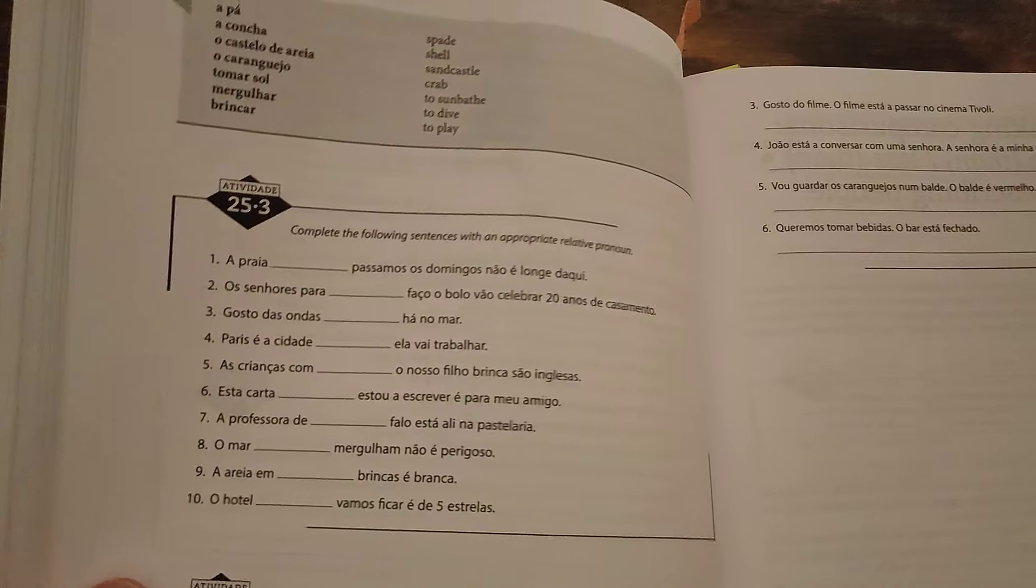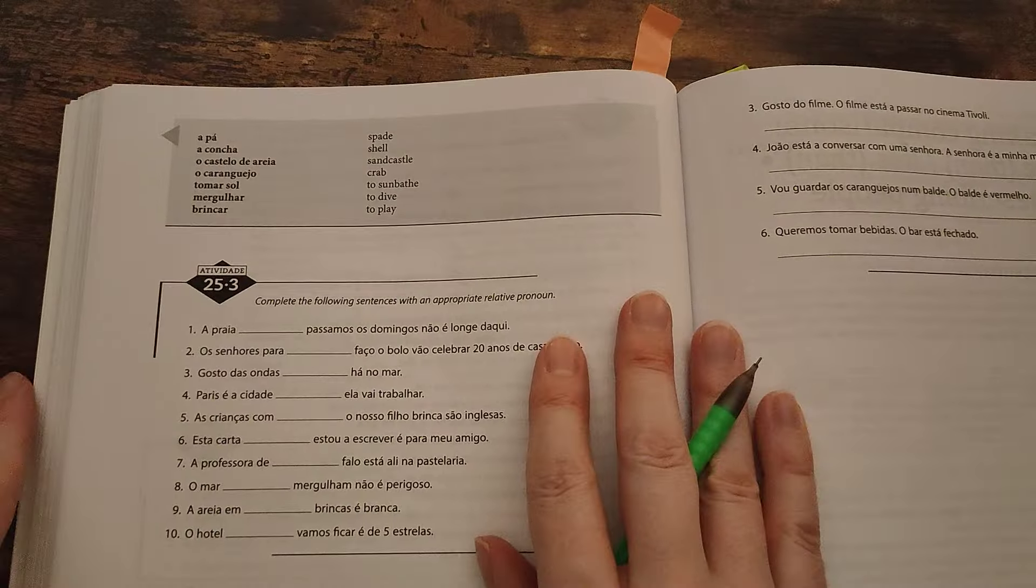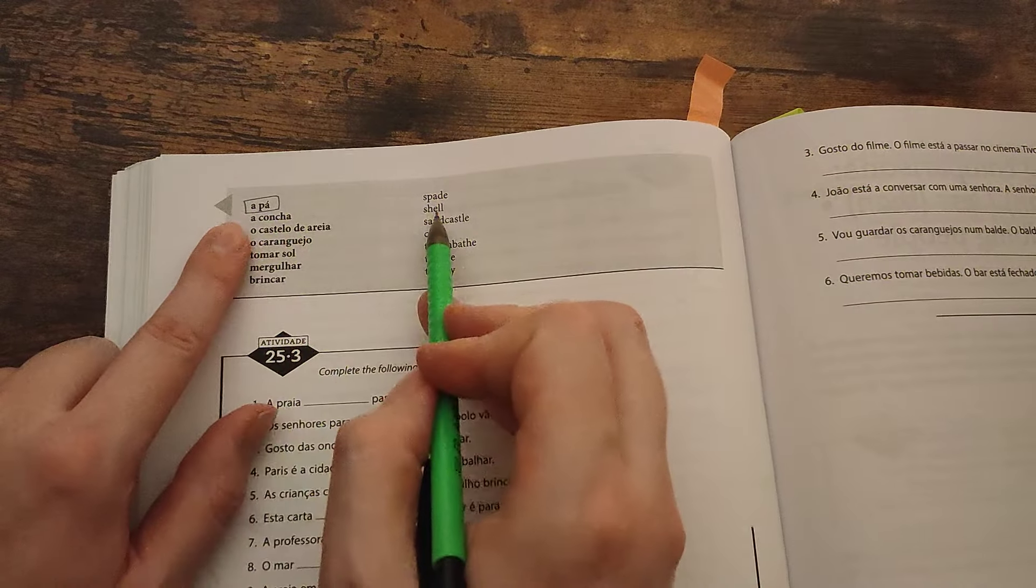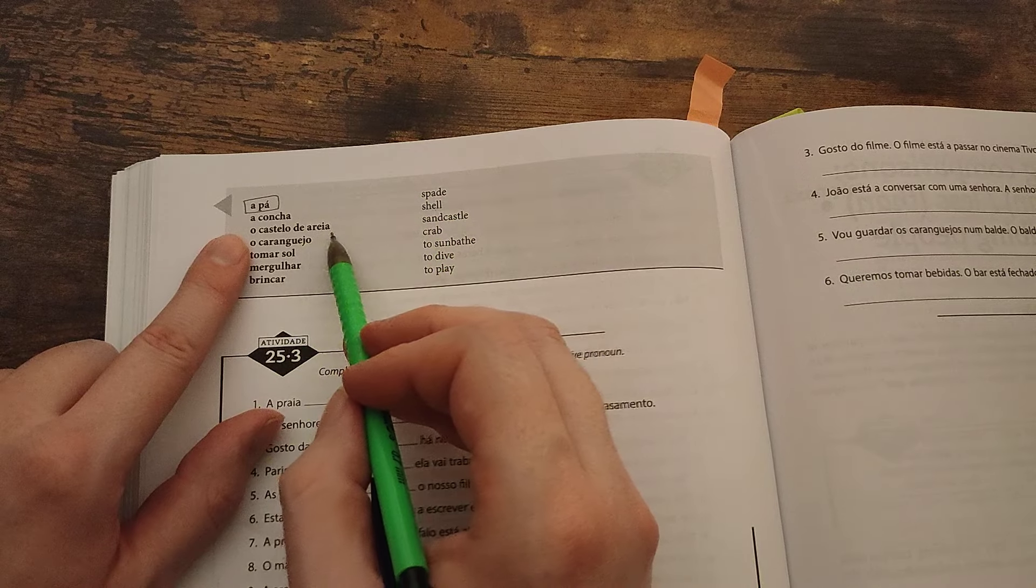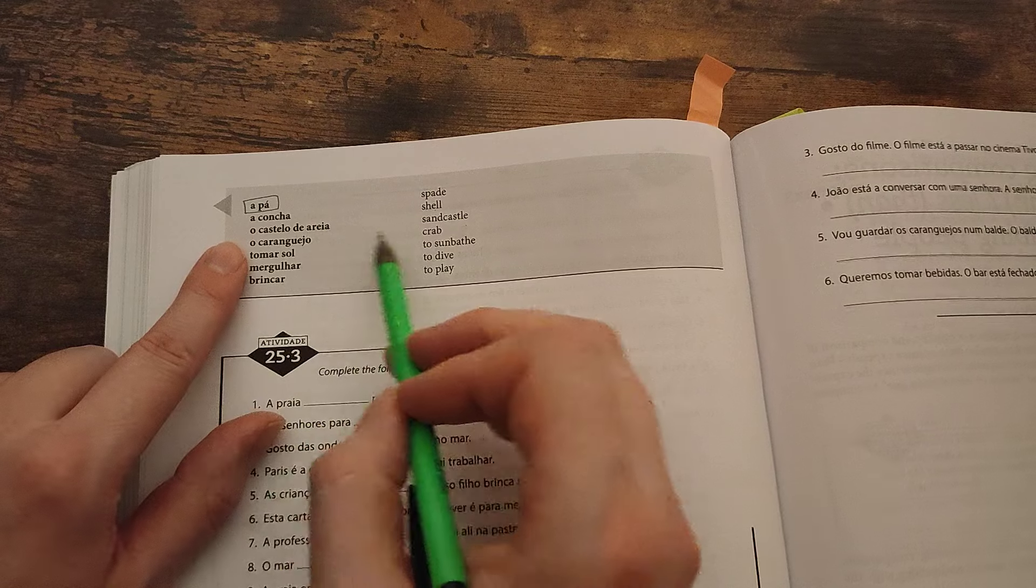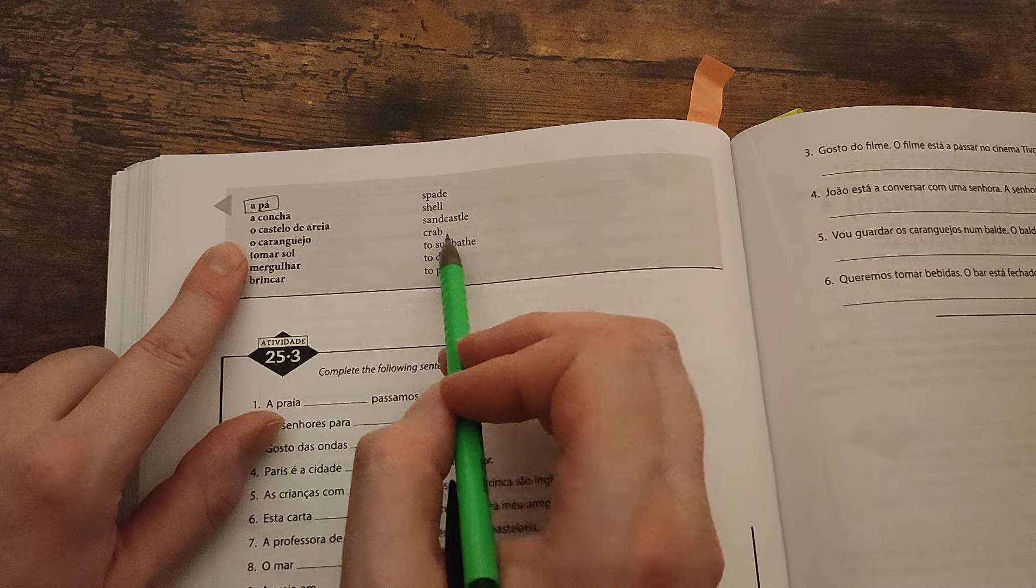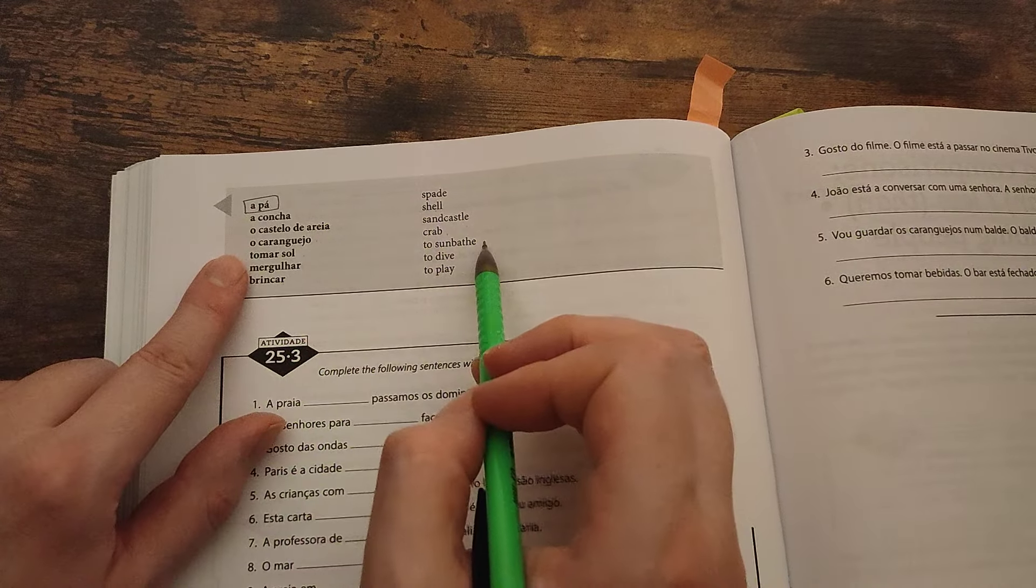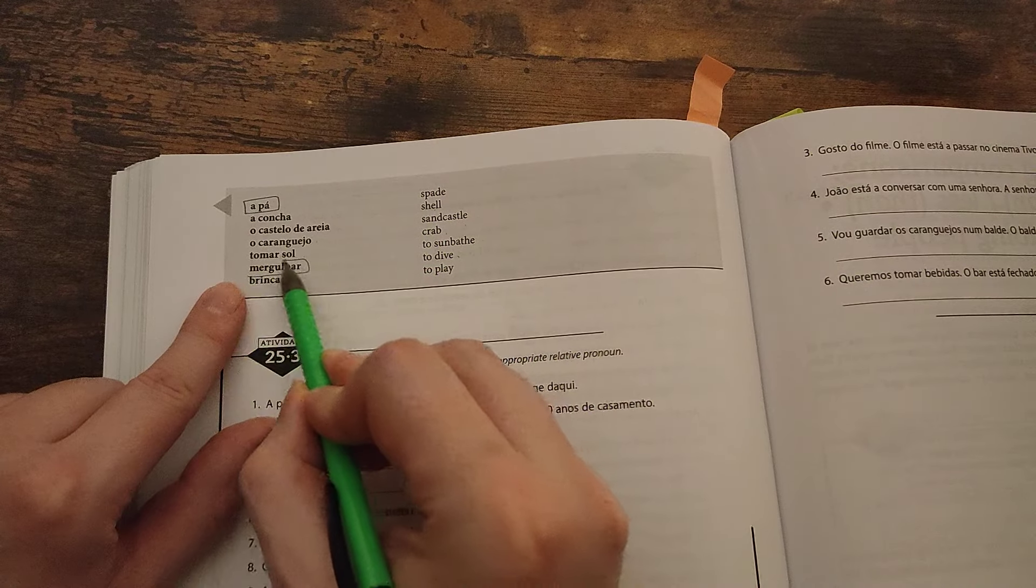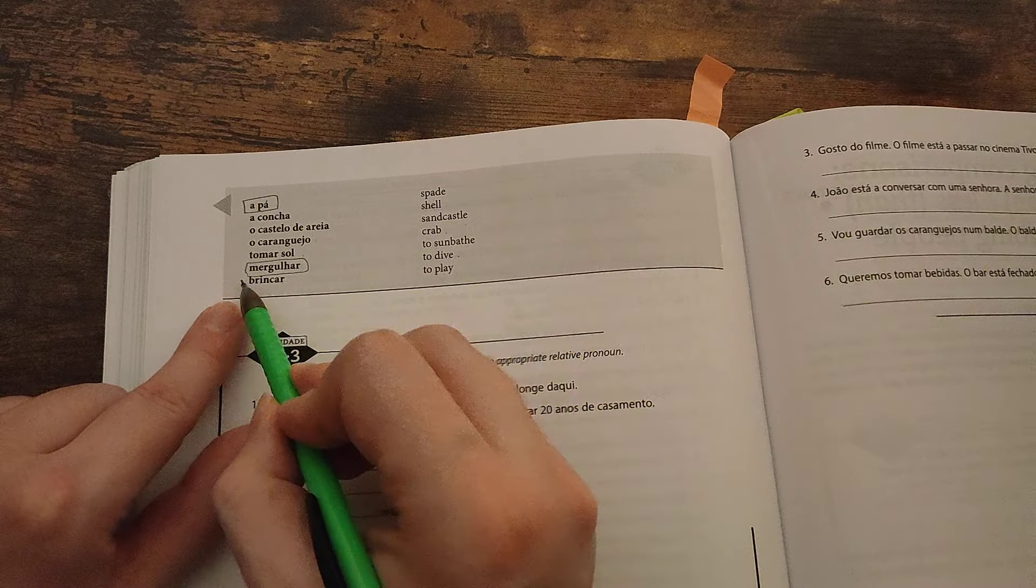Continuamos. A pá, spade. A concha, shell. O castelo de areia, sand castle. O caranguejo, um caranguejo, crab. De março, to sunbathe. Mergulhar, to dive. Brincar, to play.